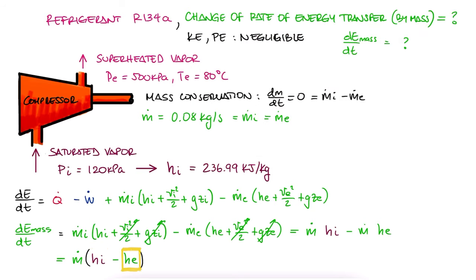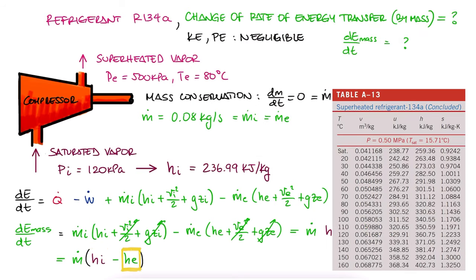And for the exit, we look up superheated R134A at 500 kilopascals and 80 degrees Celsius and write down the specific enthalpy value.